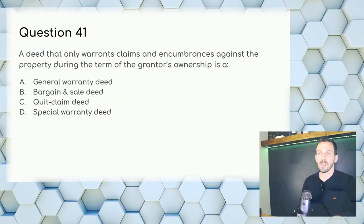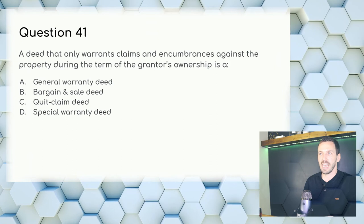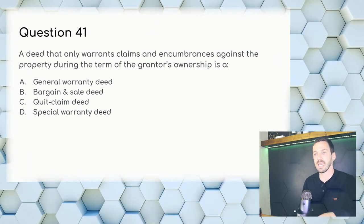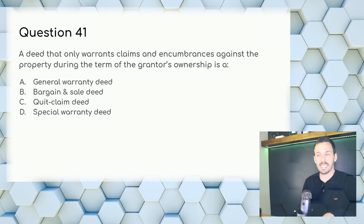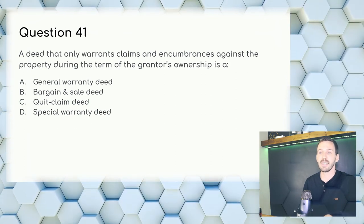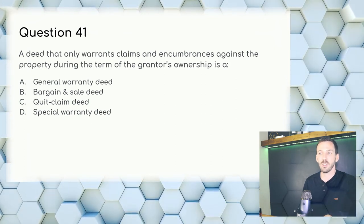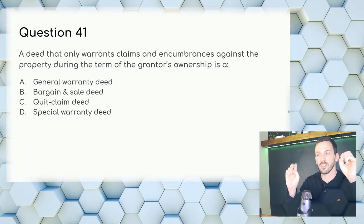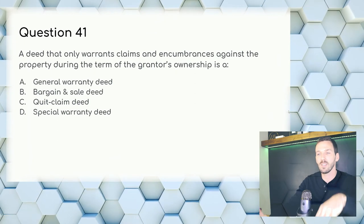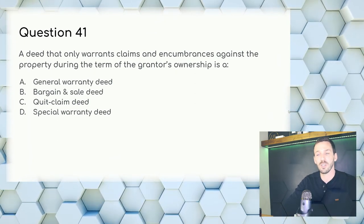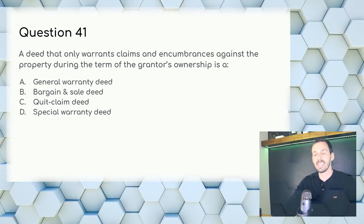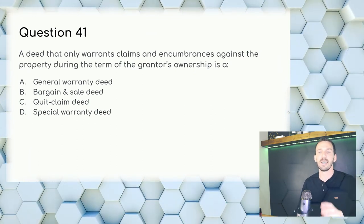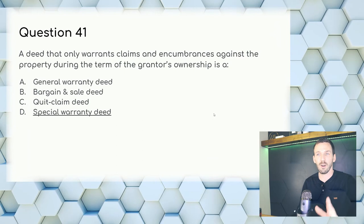Question 41: A deed that only warrants claims and encumbrances during the term of the grantor's ownership — the warranty is only for a limited time in history. A general warranty deed is essentially forever. Answer: D, special warranty deed.